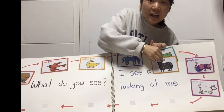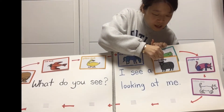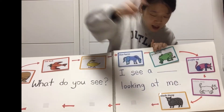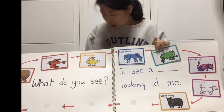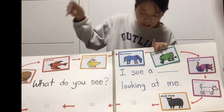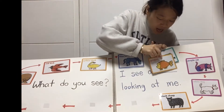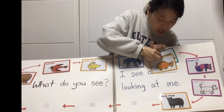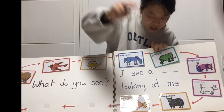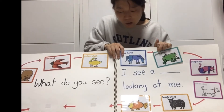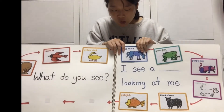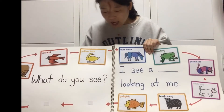I see a black sheep looking at me. Black sheep, black sheep, what do you see? I see a goldfish looking at me. Goldfish, goldfish, what do you see?